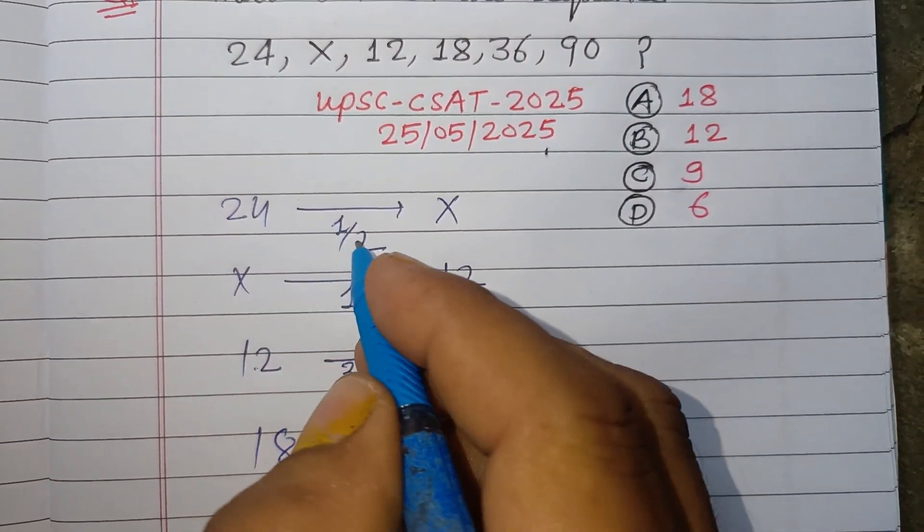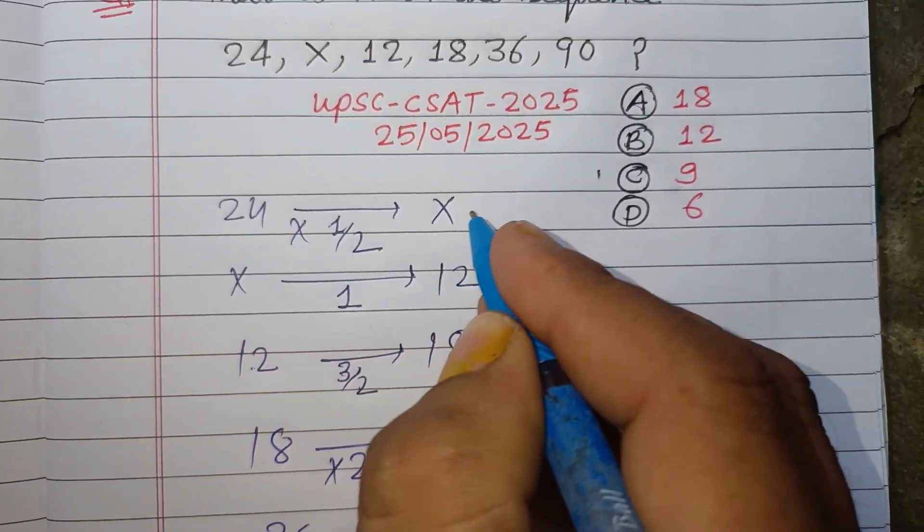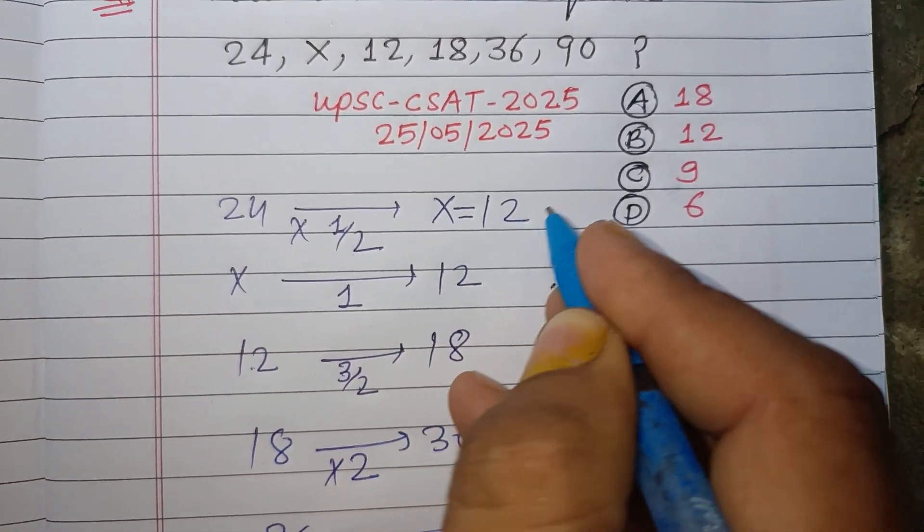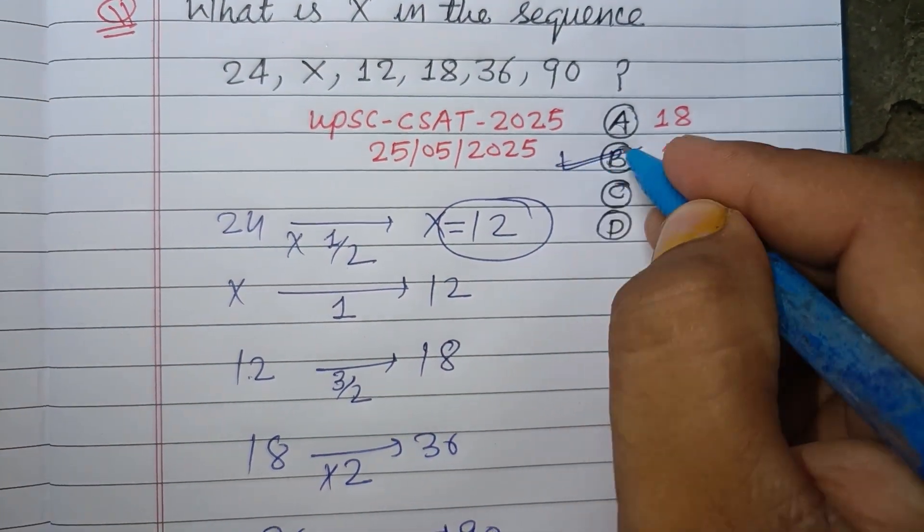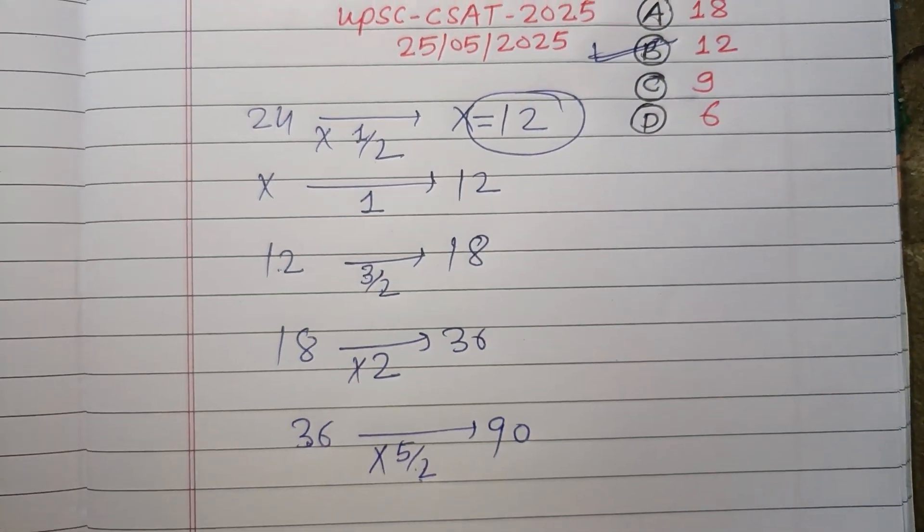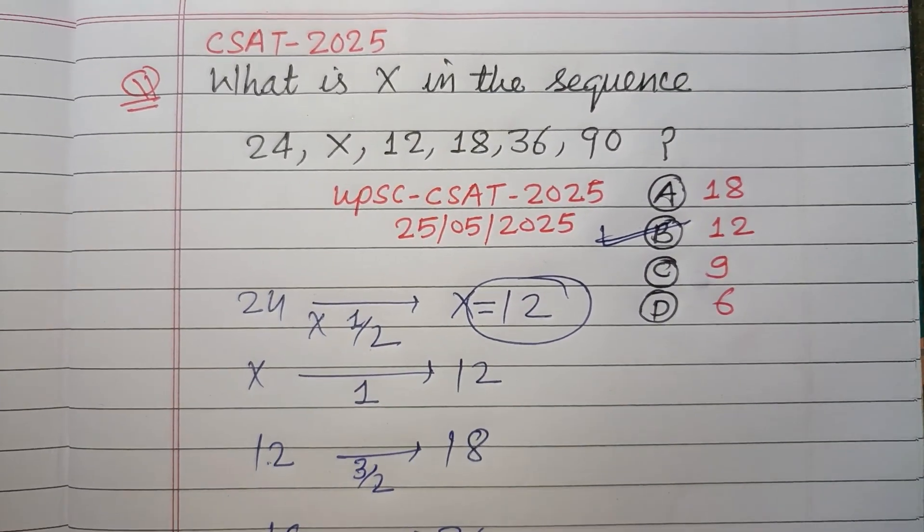Here 24 is multiplied by 1/2 to get 12. Therefore, X equals 12. 12 is the correct answer. B is the correct option. So I hope you got it. Please like the video and subscribe to the channel.